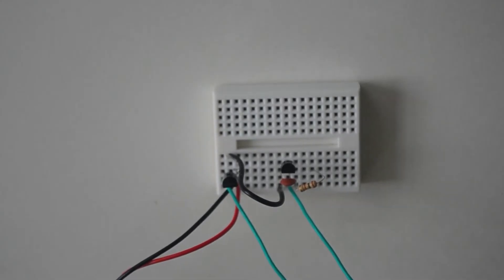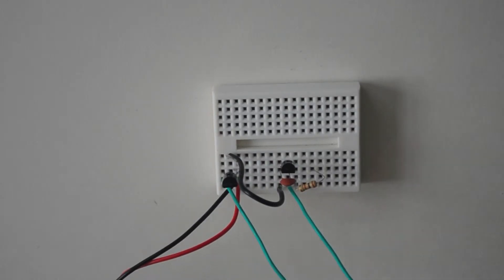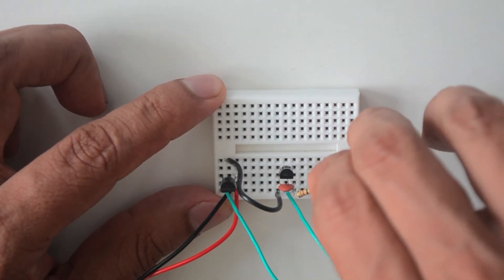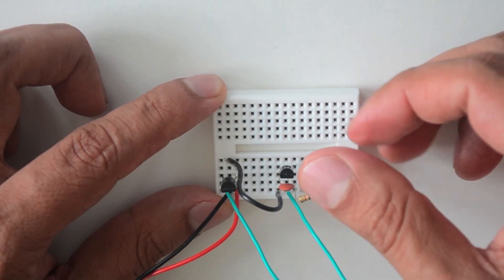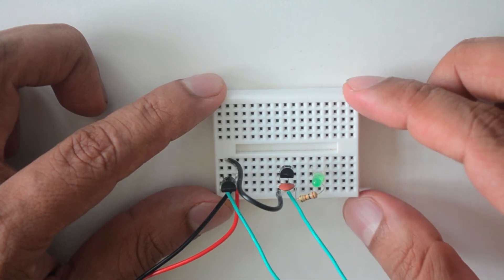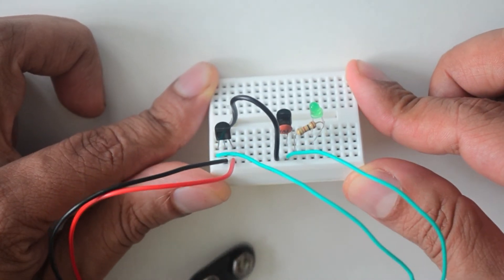Notice that the LED has one leg longer than the other. The long leg is positive and the short leg is negative. Place the LED on the breadboard so that the shorter leg is in the sixth pin hole of the second row of the lower right side of the breadboard, which is the same column as one of the resistor legs. The longer leg should go into the fourth pin hole of the second row of the lower right side of the breadboard.